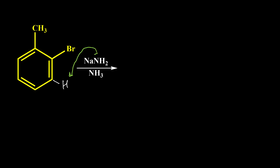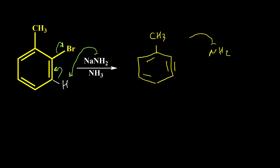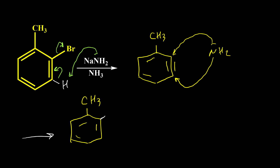Here is another example. Again, we don't have an electron-withdrawing group at the ortho and para position of bromine, so we should have the benzyne mechanism. NH2⁻ takes this hydrogen and we have expelling of bromine and formation of the benzyne intermediate. We may have addition of NH2⁻ to the ortho position or to the meta position. As a result we have two different products: NH2 attached to the ortho position and NH2 attached to the meta position.